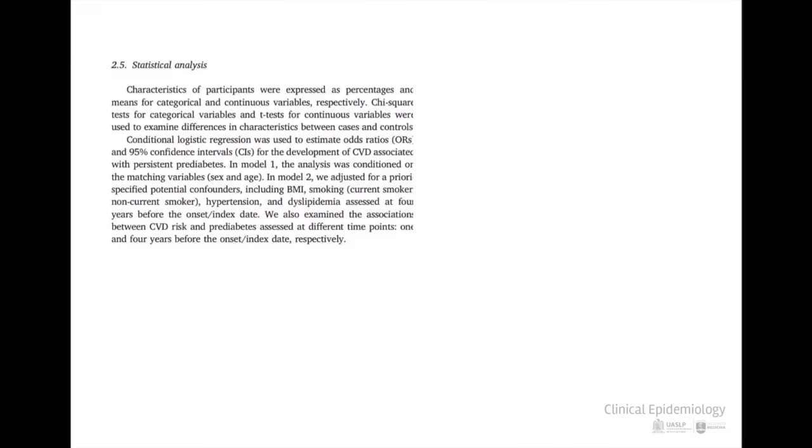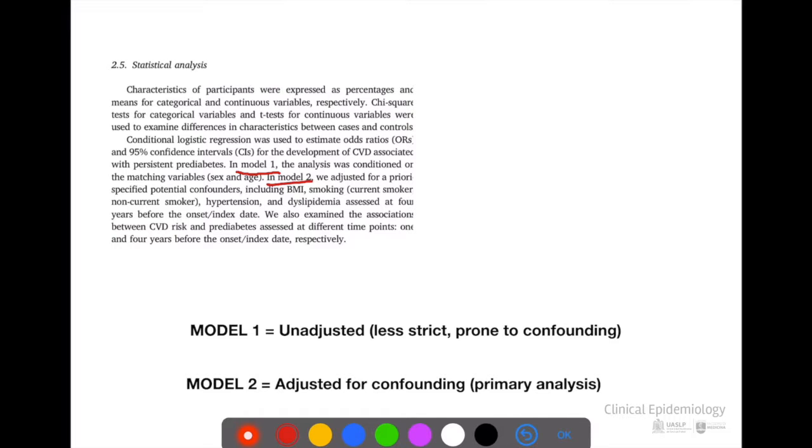As can be seen, this study included as confusing variables, in addition to dyslipidemia, body mass index, smoking, and hypertension. The authors made two models of analysis. One model, number one, did not include the confounders, while in model number two, the adjustment was carried out. This means that model two is very strict and therefore will be the one that should be taken into account for the conclusions.